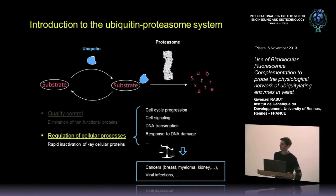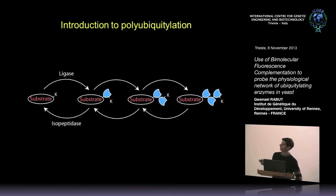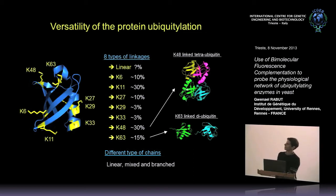Ubiquitination has many functions beyond protein degradation — it is a very versatile post-translational protein modification. This versatility arises because ubiquitin itself has lysines exposed at its surface that can be modified by another ubiquitin moiety, leading to the formation of ubiquitin chains on the substrate. There are seven lysines on the surface of ubiquitin that can be modified: K6, K11, K27, K29, K33, K48, and K63. In mammalian cells, the N-terminus of ubiquitin can also be modified, creating eight different types of ubiquitin-ubiquitin linkages that can assemble linear, mixed, or branched ubiquitin chains.